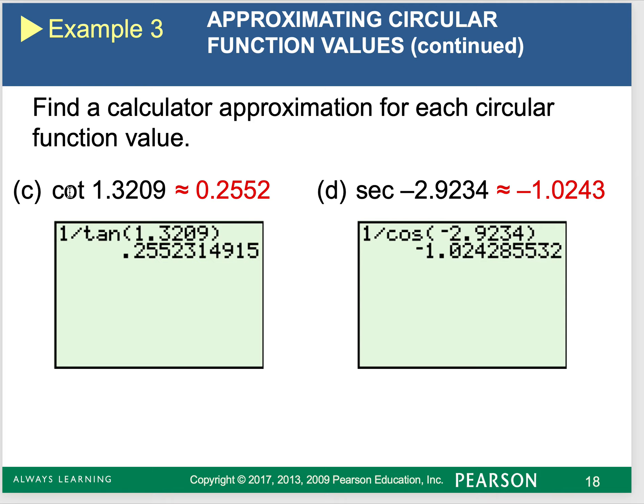The same is true for cotangent and secant. Some calculators actually have a cotangent and a secant button. And those are going to be useful if it has it. If it doesn't have a cotangent and a secant button, that's okay. We can do 1 divided by the tangent.